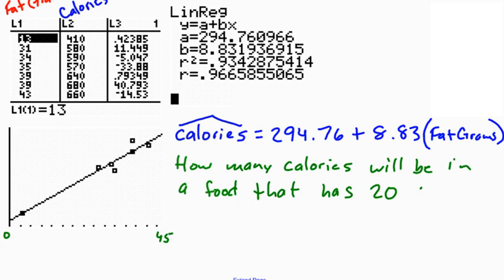That has 20 fat grams. So you look here, and I've got, in my original data, I've got 13 fat grams, and I've got an observed value, and then it jumps all the way up to 31, and then it goes to 43. I have nothing in the 20s, so let's make a prediction here.